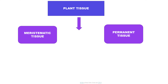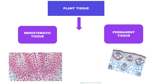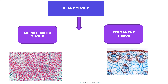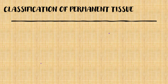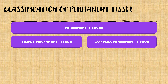Meristematic tissues are those tissues which are in a continuous state of division. These cells have abundant cytoplasm, big nucleus, and very thin cell wall, making it easy for the cell to divide. Permanent tissues derive from meristematic tissue but have lost their capacity of division either temporarily or permanently. Permanent tissue can be further classified into simple permanent tissues and complex permanent tissues.